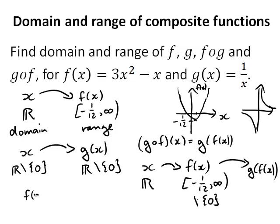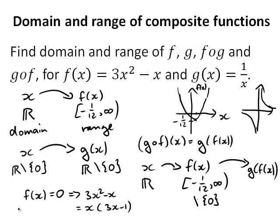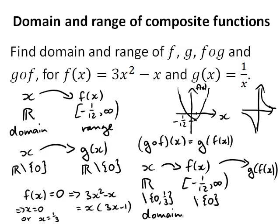If f of x can't be 0, we also need to exclude the x values that make f of x equal to 0. So where is f of x equal to 0? f of x is 3x squared minus x, which factorizes to x times (3x minus 1). That means f of x equals 0 when x equals 0 or x equals 1/3. These are the values we can't have for x — otherwise f of x becomes 0 and that gets put into g. So we remove 0 and 1/3 from the domain, giving the domain of g∘f as ℝ excluding {0, 1/3}.